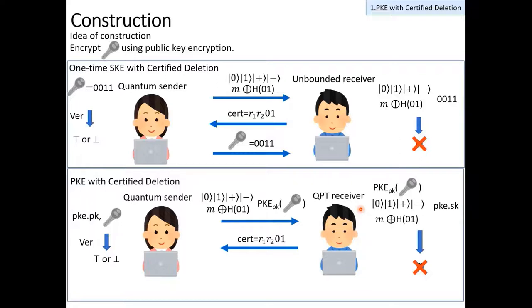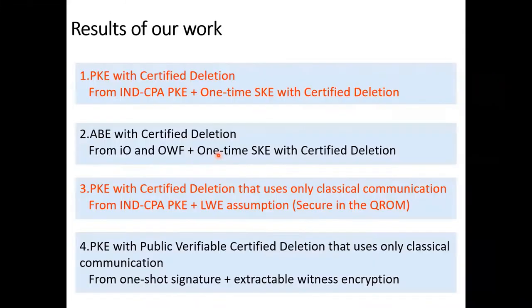But for the formal proof, we have to construct a protocol using receiver non-committing encryption instead of public key encryption. Technically, this is the most important part of our work on public key encryption with certified deletion. But for ease of explanation, I skip the formal proof. If you are interested in the formal proof, please read our paper. Now, I finish the first part. Then, I start the second part, which is certified deletion with classical communication.